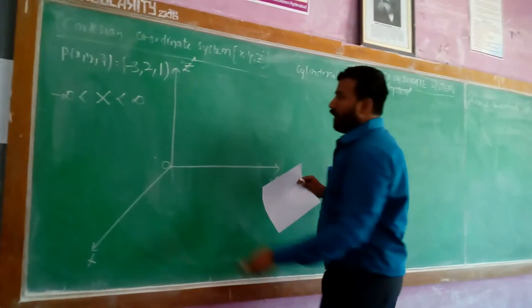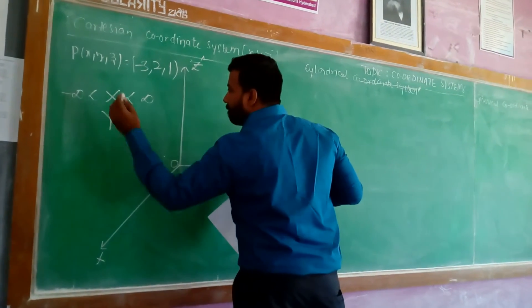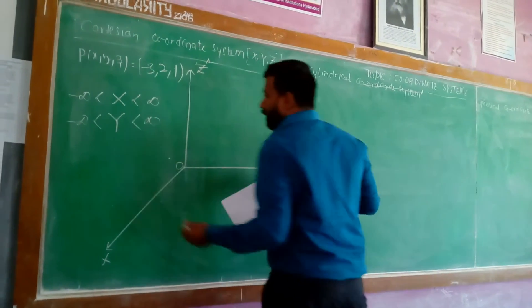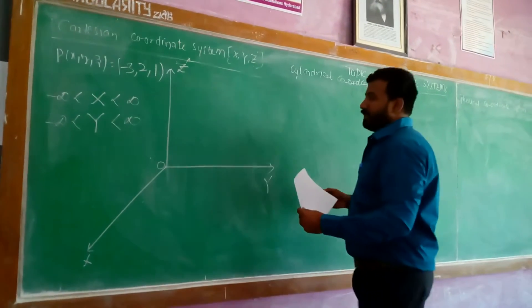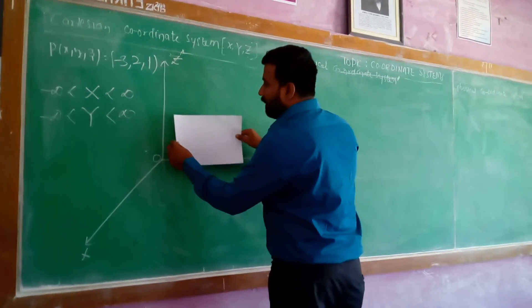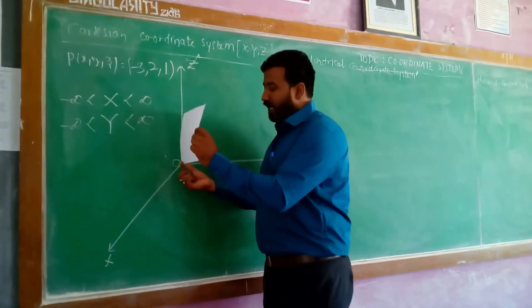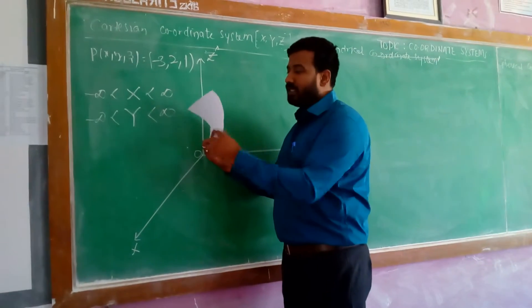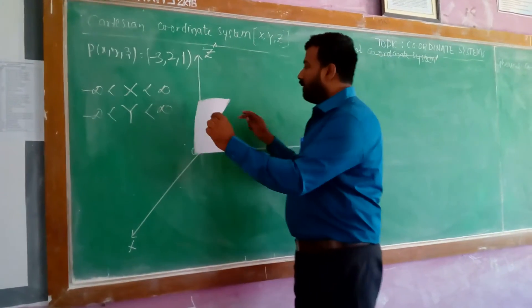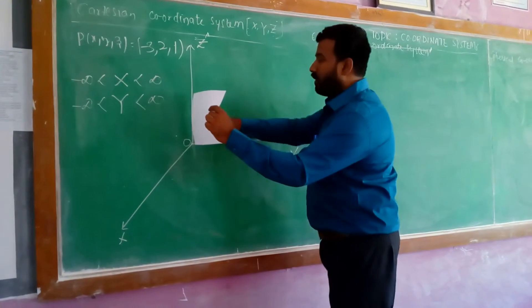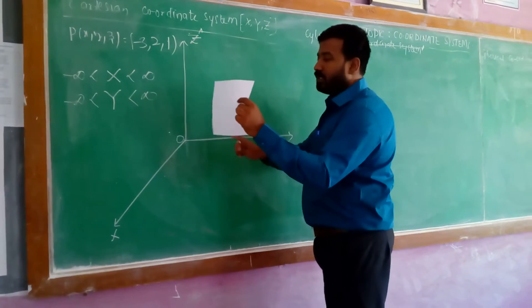Coming to y: y is also from minus infinity to plus infinity. It is the shortest distance or perpendicular distance from the x-z plane. For example, if you plot (−3, 2, 1), the value 2 will come here, which is the shortest distance from the x-z plane.